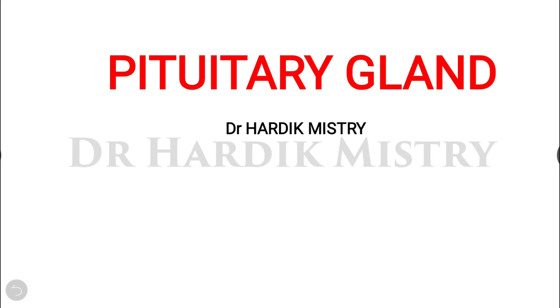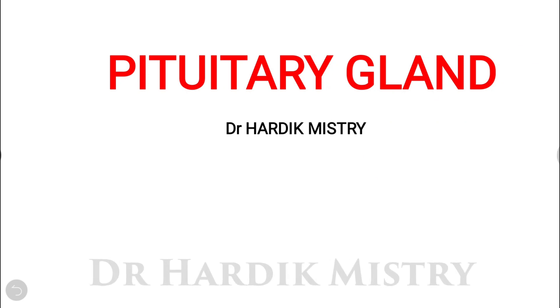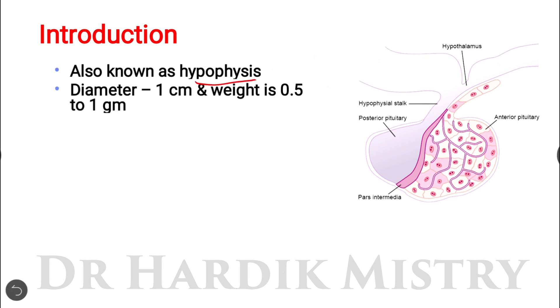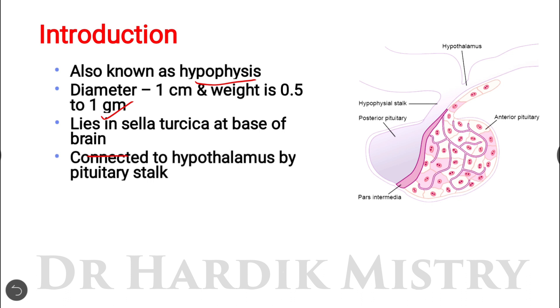In this video we are going through the pituitary gland. It is also known as hypophysis, with a diameter of one centimeter and weight of 0.5 to 1 gram. It lies in the sella turcica at the base of the brain.